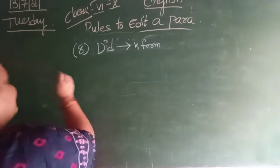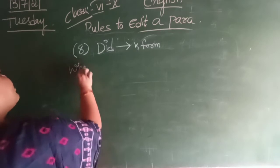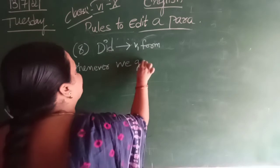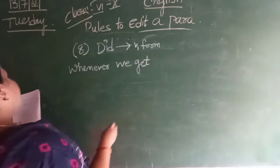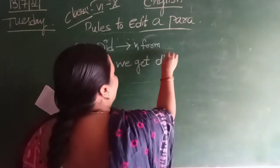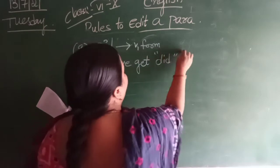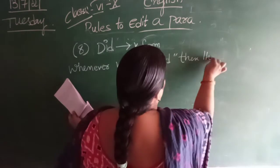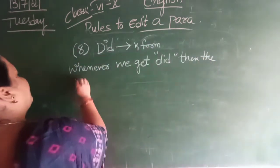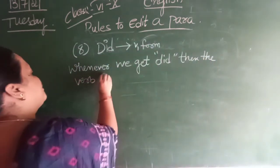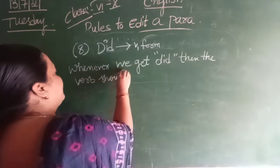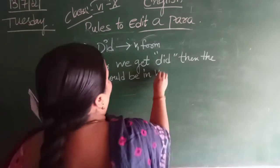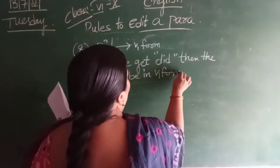That's what I write here. Whenever, what I told the same thing I am writing on the board also. So, whenever we get, whenever we get did, okay, then, then the verb should be, then the verb should be in V1 form. V1 form. Okay.